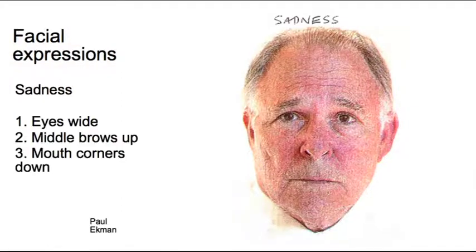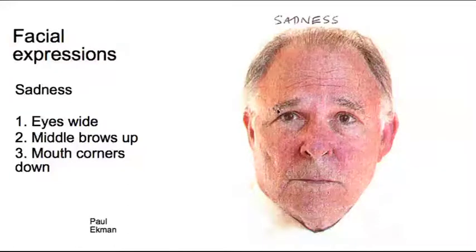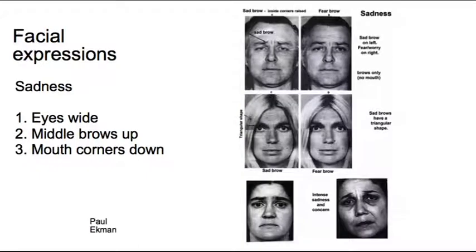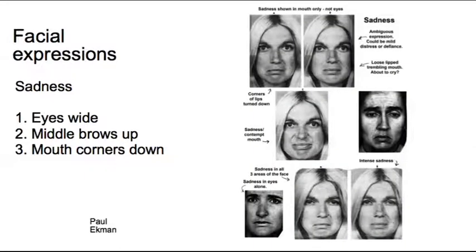This one is sadness: you've got wide eyes, the brows are angled up, wrinkles in the forehead, and mouth corners down. Here are more variations on sadness — intense sadness, with that V shape in the eyebrows. Fear and sadness are quite closely related, which is why we have to caricature everything — these images can be quite subtle. But our human faces have an immense range of expression.